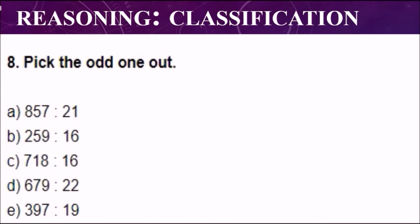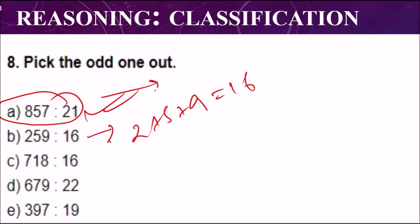Question number eight: find the odd one. The correct option is option number A, because in all options the second number is the sum of all digits of the first number except for option A. Option B: 2 plus 5 plus 9. Two plus five is seven, seven plus nine is 16, and you can see there is 16. Option E: 3 plus 9 is 12, and 12 plus 7 is 19.